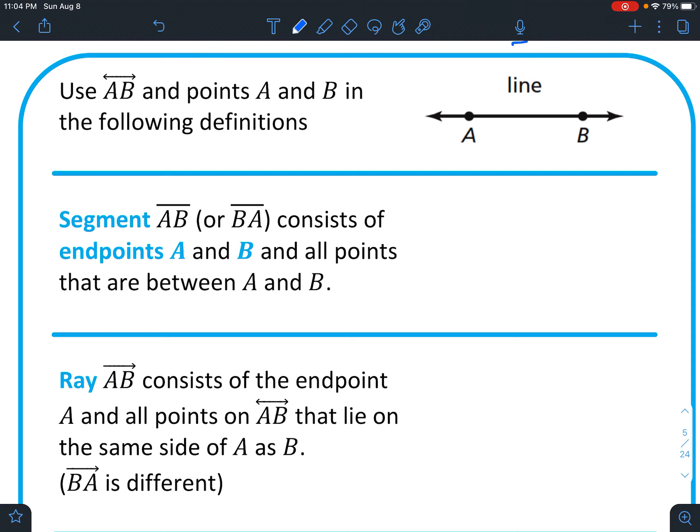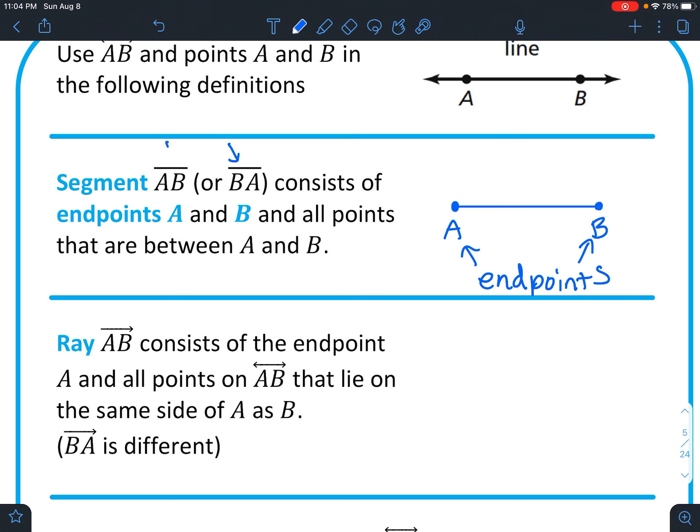So it says segment AB or BA consists of endpoints A and B and all points that are between A and B. So remember we said a line goes forever in each direction. The line segment is just a piece of that line and it's defined with endpoints like that. And so you could say these are endpoints. And then notice it doesn't, once again, it doesn't matter if you say AB or BA. And notice that when you represent a segment, you don't put the little arrows on the end.